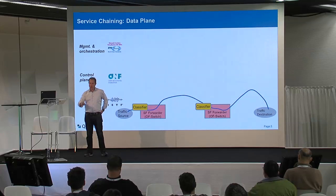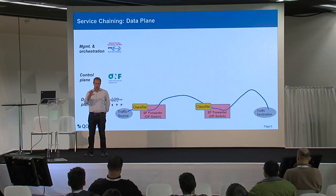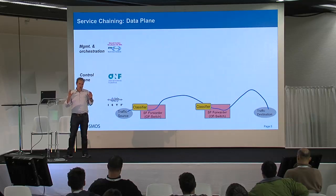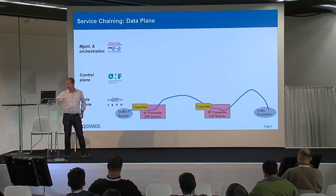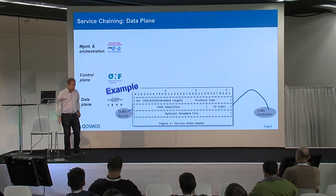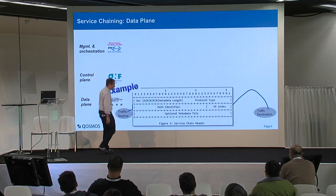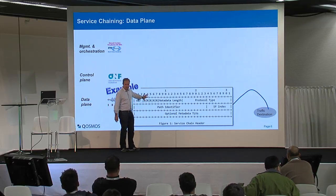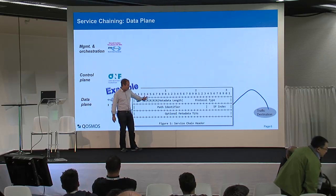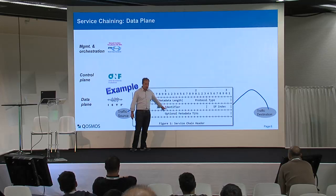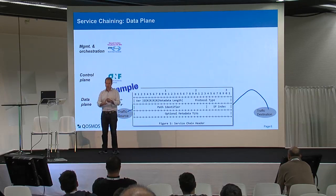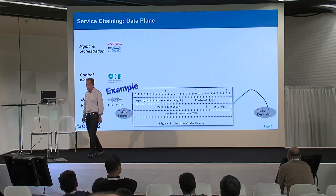That's what we are working on at the IETF — mainly service chaining taken from the data plane point of view. In a typical example from the IETF draft, you add a header in front of an IP packet containing a path identifier, and this path can be the result of a rule engine taking into account subscriber ID and application ID.